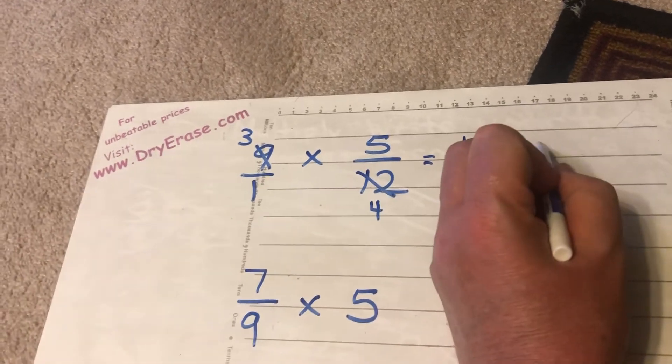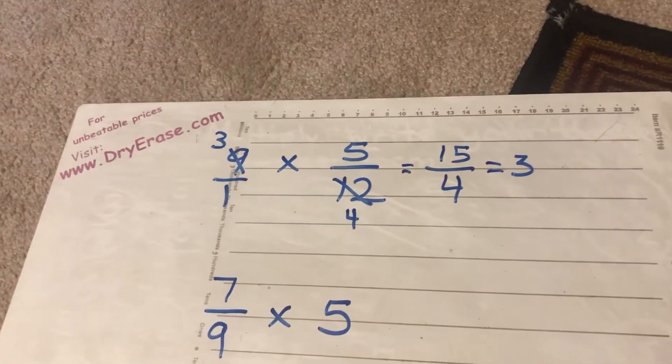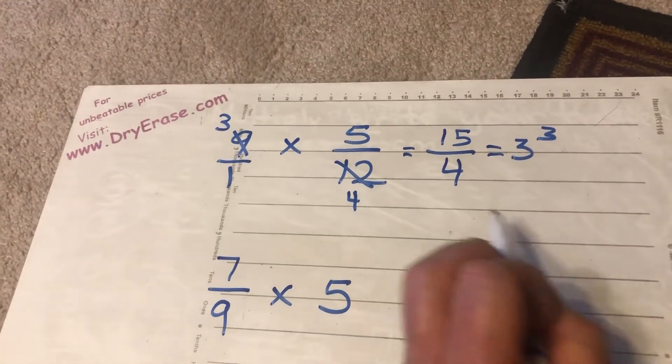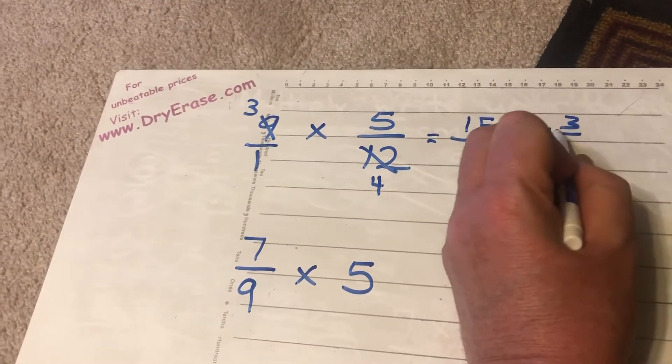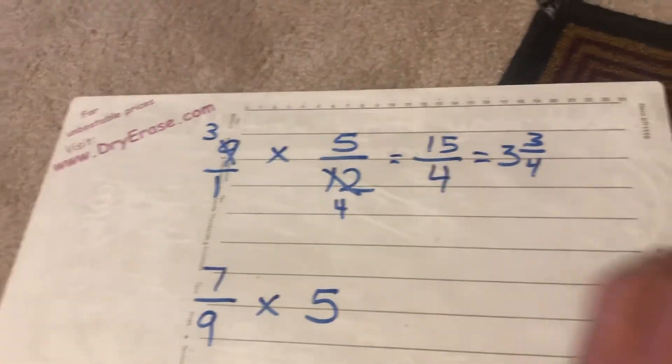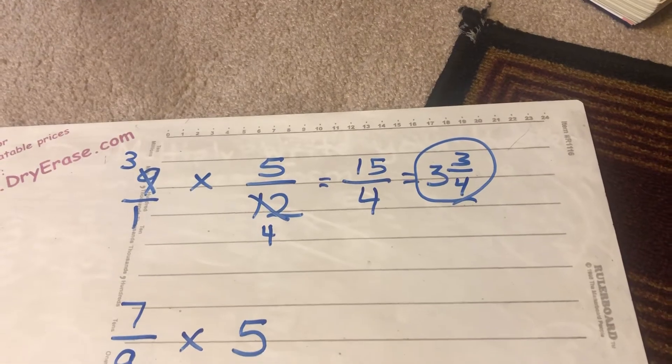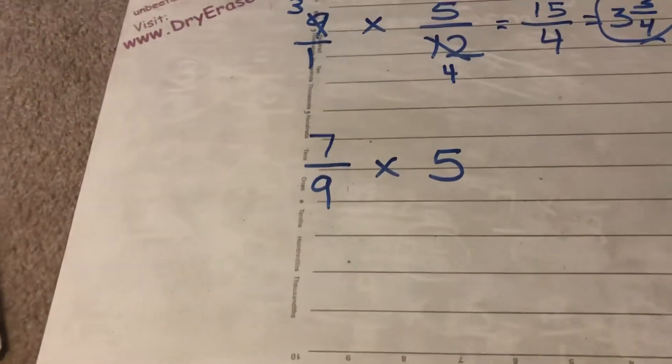Well 4 can go into 15 three times. If I take 4 into 15 three times I will have 3 left over. My denominator here is 4 so my denominator there is 4. I end up with a final answer of 3 and 3 fourths. Alright, last one for this video.